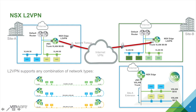Let's take a look, from a diagram point of view, at how it looks. Typically you spin up the L2 VPN from NSX Edge on two sites and connect them over a layer 3 network. After that you can trunk the VLANs that you'd like to extend across to the other sites. The layer 2 VPN supports a few network types: you can extend VLAN to VLAN, VXLAN to VXLAN, or even VLAN to VXLAN.